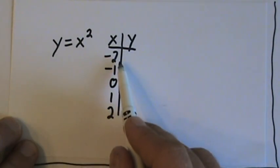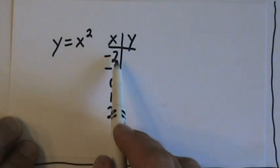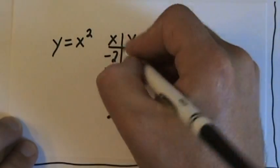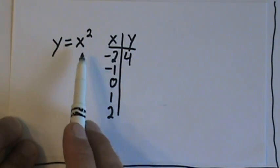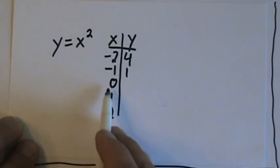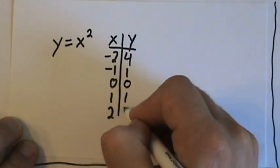Now we plug these values of x into our function and see what y would be. Negative 2 squared is 4. Negative 1 squared is 1. 0 squared is 0, 1 squared is 1, and 2 squared is 4.